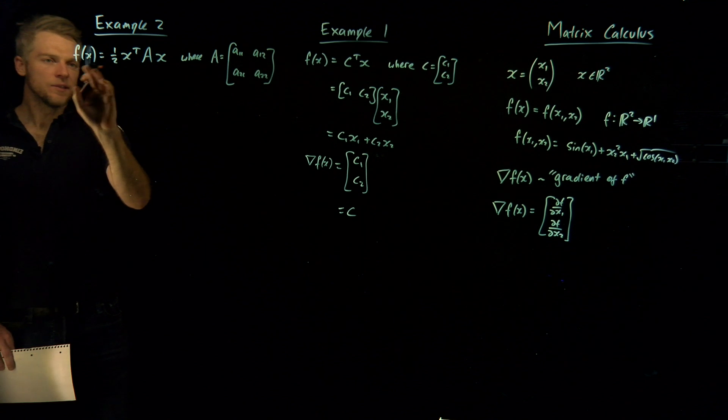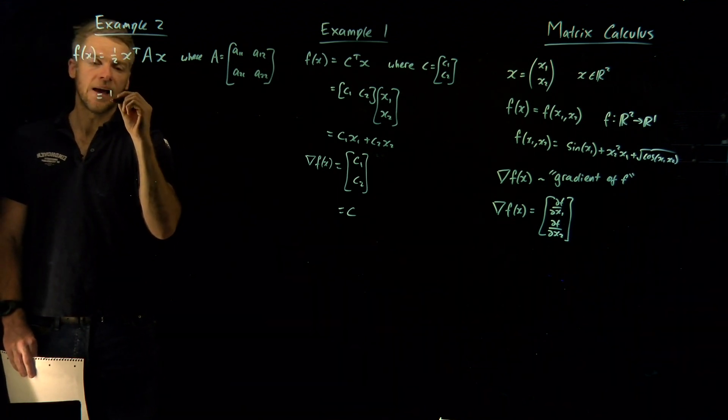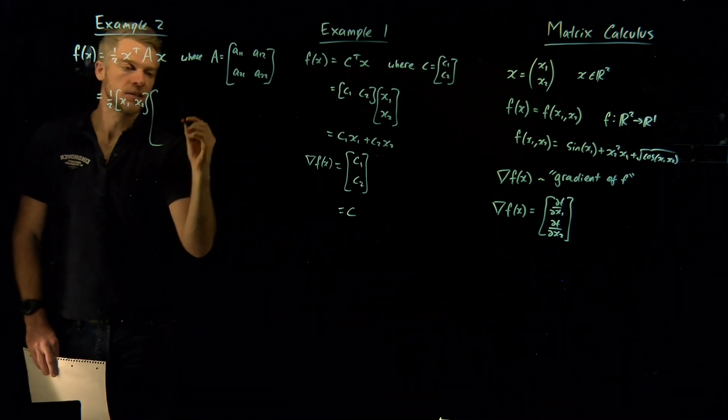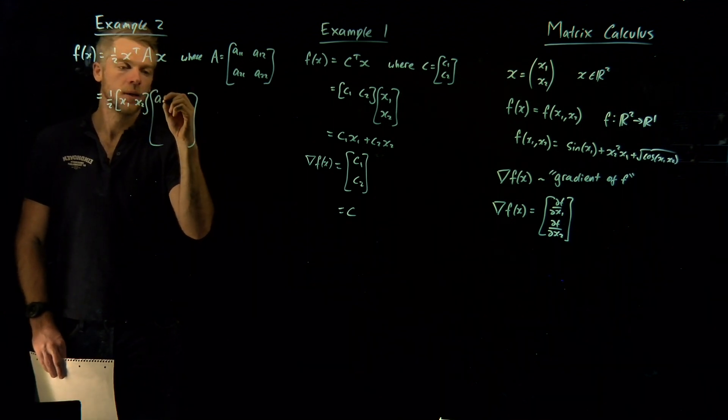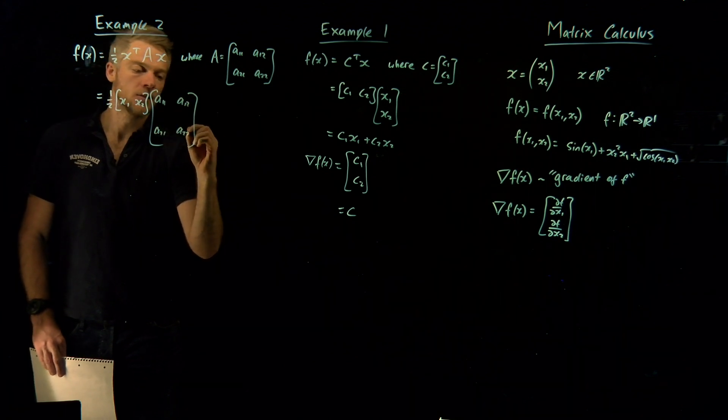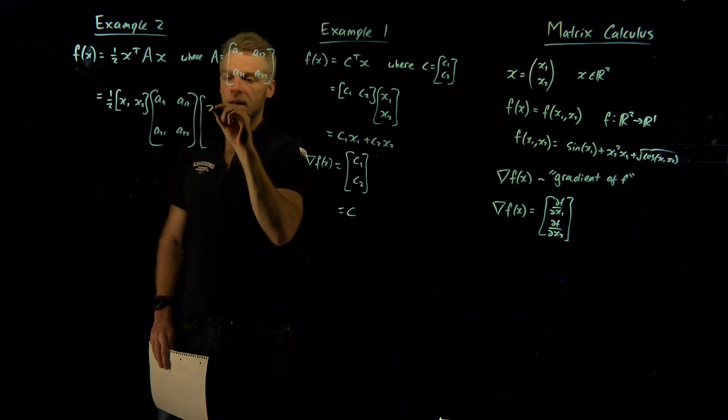Now in this case, we could even write it out. This is going to be a half times by x1, x2 times by this beast of a matrix I just wrote out. A11, a12, a21, a22. And then we've got our x vector again, x1, x2.